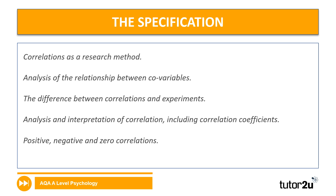And here is the specification. Correlations is a bit sneaky on the specification because it's mentioned at a couple of different points, so you may have missed some reference to correlations. The key things are correlations as a research method, analysis of the relationship between co-variables, the difference between correlations and experiments. We'll be looking at correlations and correlation coefficients and talking about the different types of correlations.